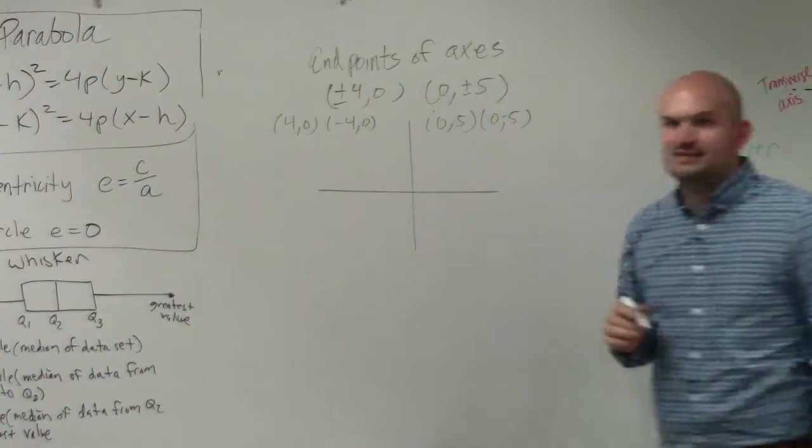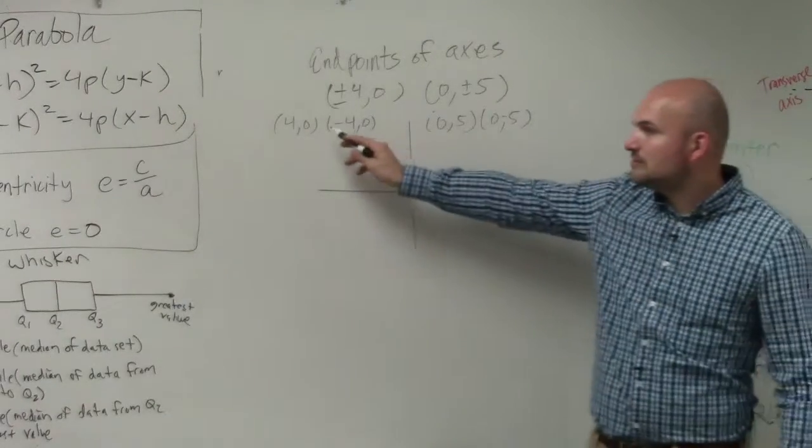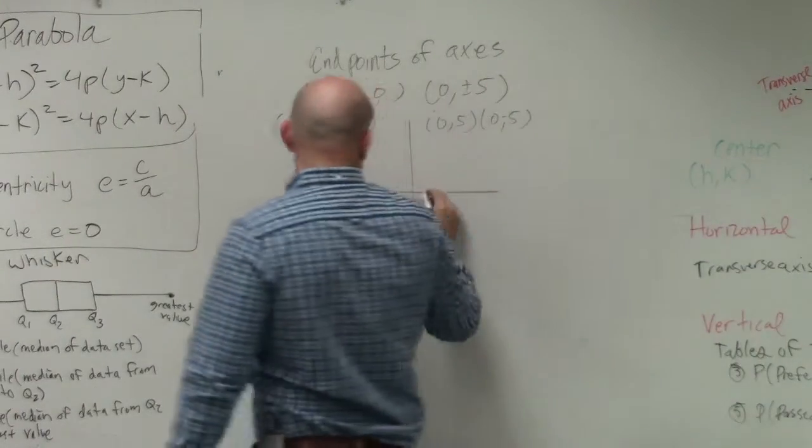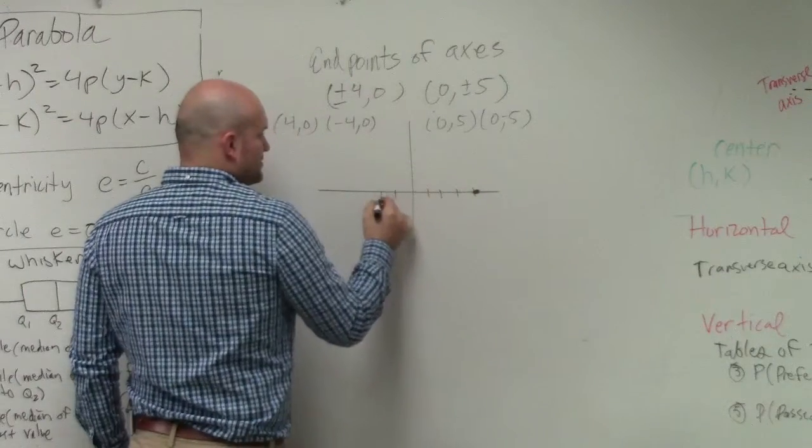Does everybody understand how they presented them and how we can plot them up there? So this is going to be 4 comma 0, 1, 2, 3, 4. Negative 4 comma 0, 1, 2, 3, 4.